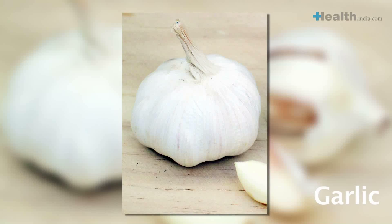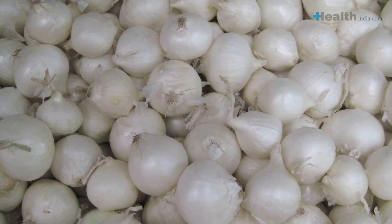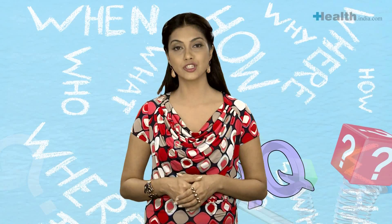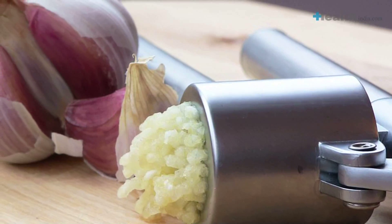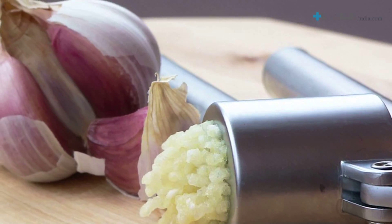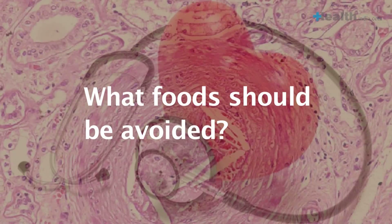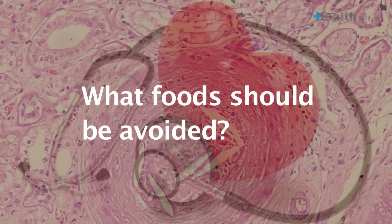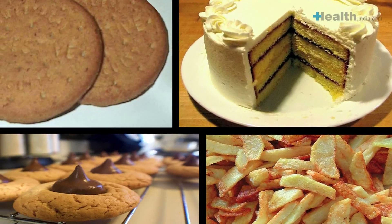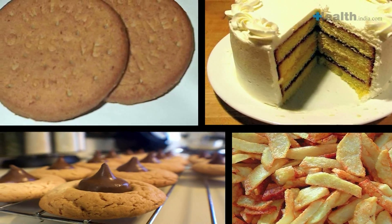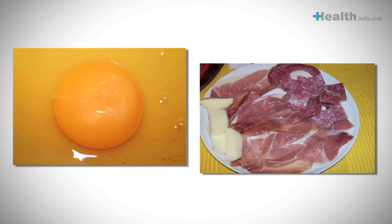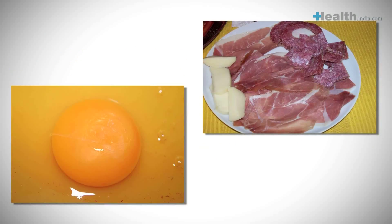Garlic: though the cholesterol-lowering effects of garlic have been debated in recent times, the allicin content in garlic has been shown to help a great deal in reducing cholesterol levels. Foods to avoid: avoid processed foods like biscuits, cookies, cakes, and fried foods. Also avoid red meat and egg yolk.